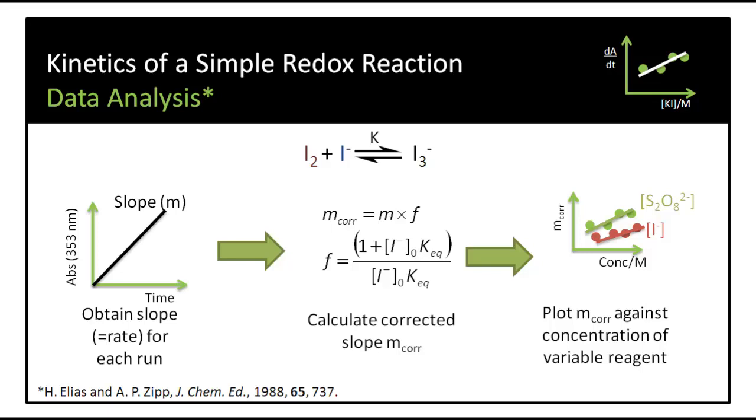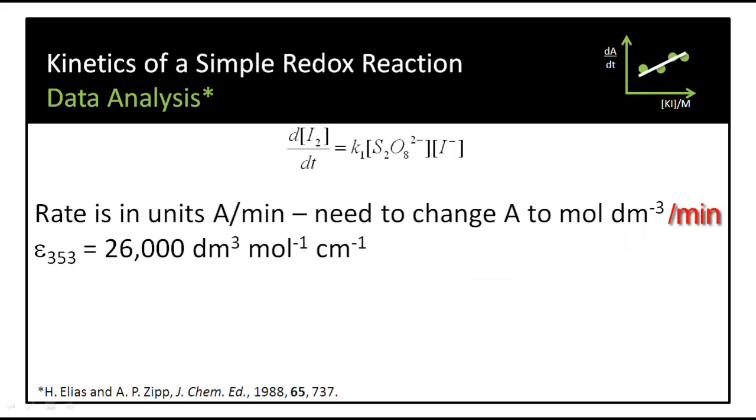Once we have these corrected slopes, we can plot the corrected slope against the concentration of the variable reagent, either iodide or persulfate, and confirm that indeed these are straight line plots, and therefore the reaction is first order with respect to both of those reagents.